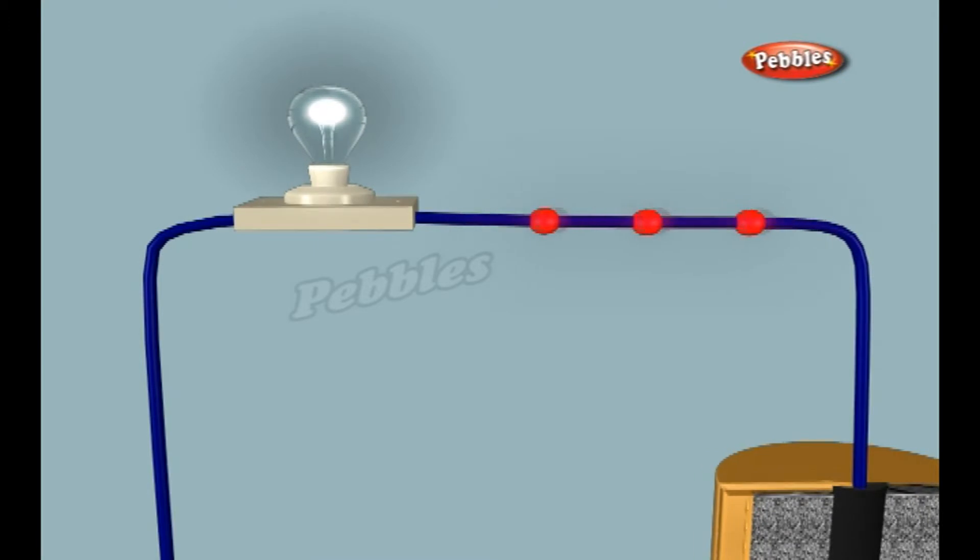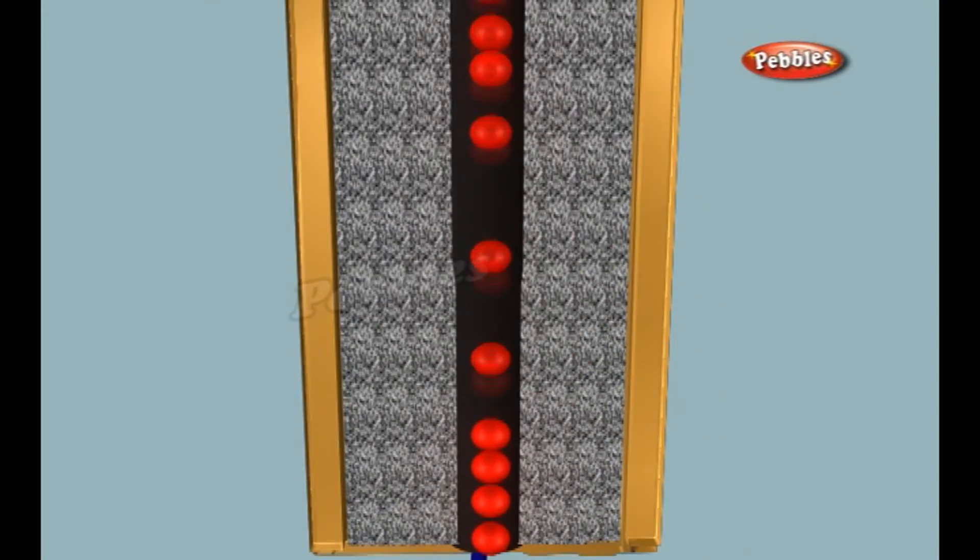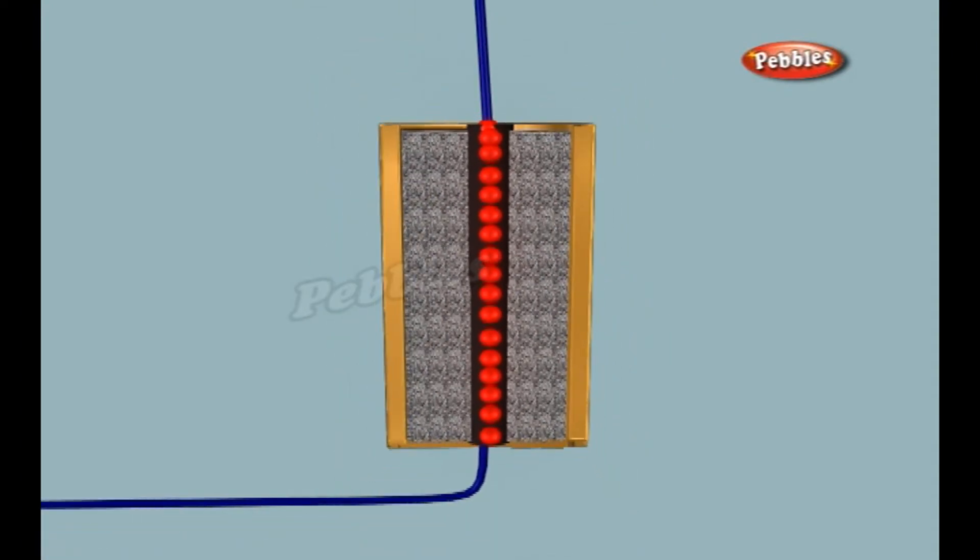However, these electrochemical processes change the chemicals in the anode and cathode to make them stop supplying electrons. So there is a limited amount of power available in a battery.